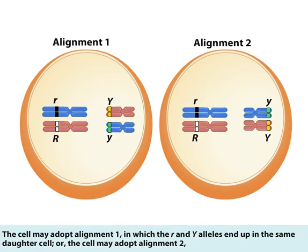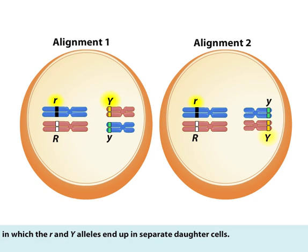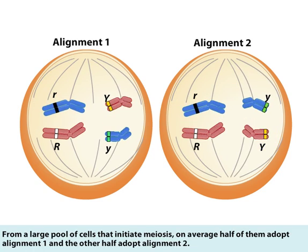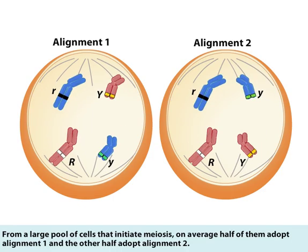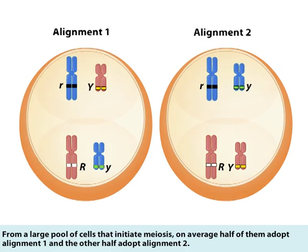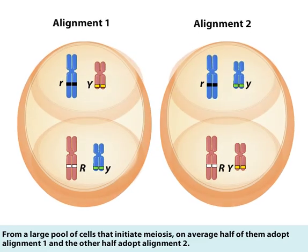The cell may adopt alignment 1, in which the little r and big y alleles end up in the same daughter cell. Or, the cell may adopt alignment 2, in which the little r and big y alleles end up in separate daughter cells. From a large pool of cells that initiate meiosis, on average, half of them adopt alignment 1, and the other half adopt alignment 2.